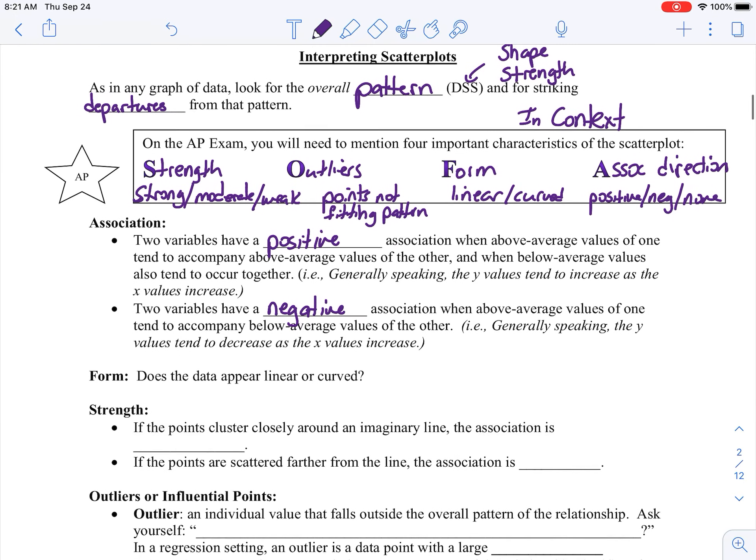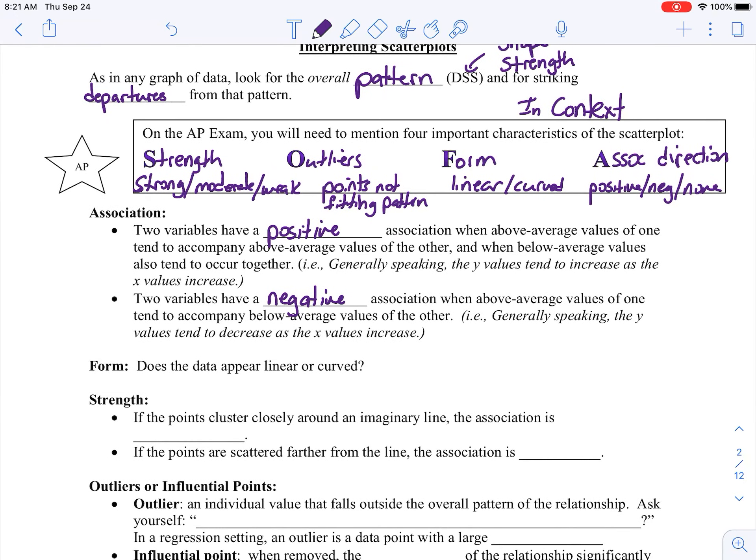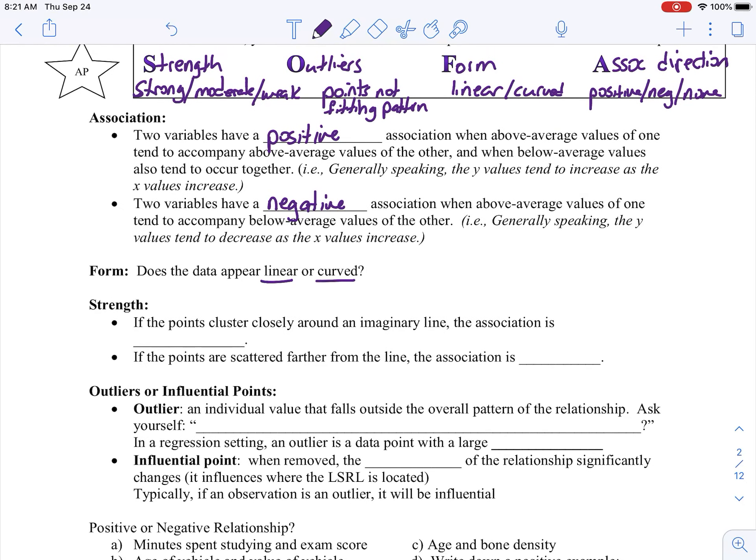Form, again, does it appear to be linear or curved? Those are going to be my two. Strength, if the points cluster around an object, then the association is going to be considered strong. And then, if the points are scattered further from the line, the association is going to be weak. We'll get more into strength when we talk about correlation on the next page.